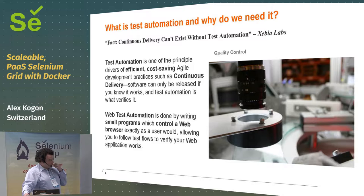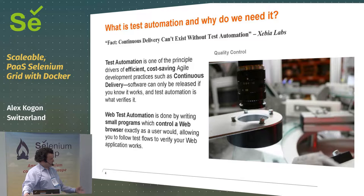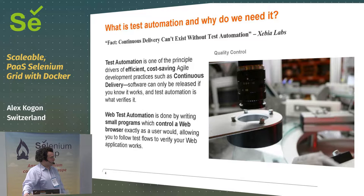If you're using continuous integration, every time you check in your code — assuming your check-ins are small — you know that between this check-in and that one you broke it, and you don't have to look too hard for where you broke your code. Continuous delivery is the idea that you can take your continuous integration — you have automated testing as part of it, and you also have automated delivery of your software. You're building your software, deploying it, and then testing it. So they said, well, we can deploy our software automatically, why don't we deploy it into production automatically? And so that's continuous delivery.